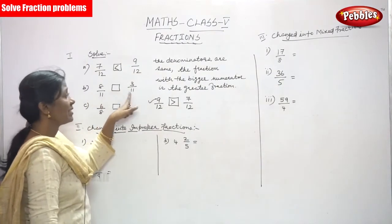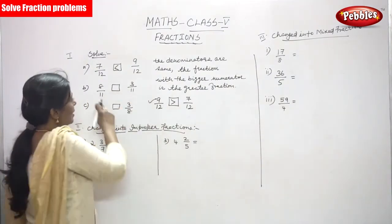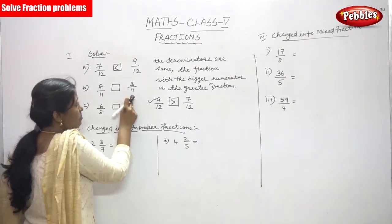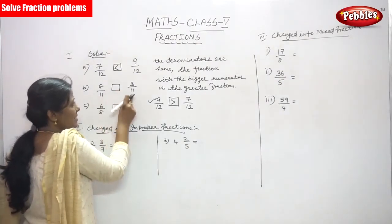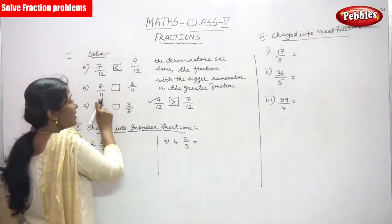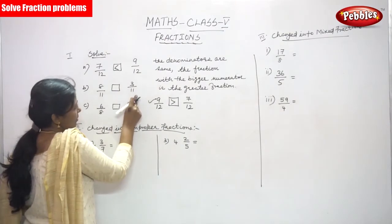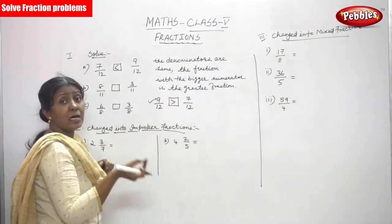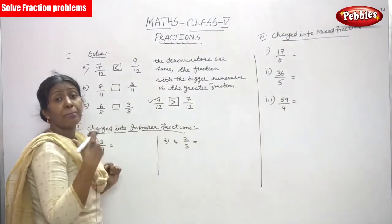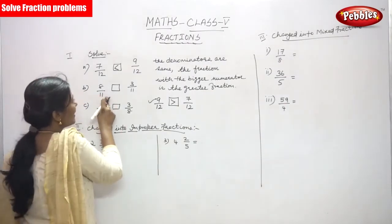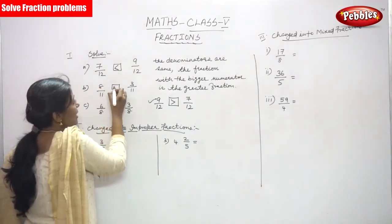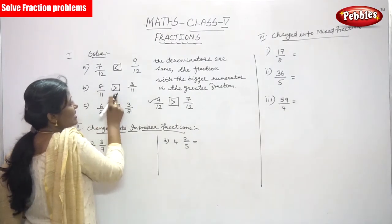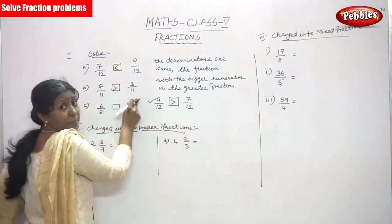Next: 8 by 11 and 3 by 11. In both fractions the denominators are the same, so it is a like fraction. If the denominators are the same, you have to look only at the numerator. The fraction with the bigger numerator — 8 is the bigger numerator — so 8 by 11 is greater than 3 by 11.